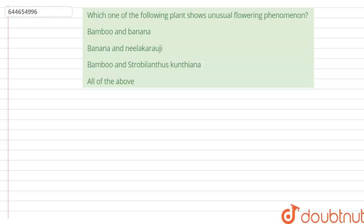Which one of the following plants shows unusual flowering phenomenon? The options are: bamboo and banana, banana and neelakarogi, bamboo and strobilanthus kuntiana, all of the above. So the correct option for this question is bamboo and strobilanthus kuntiana.